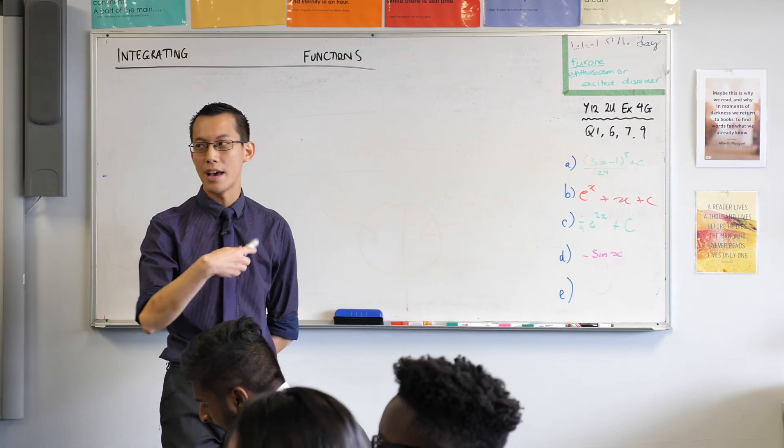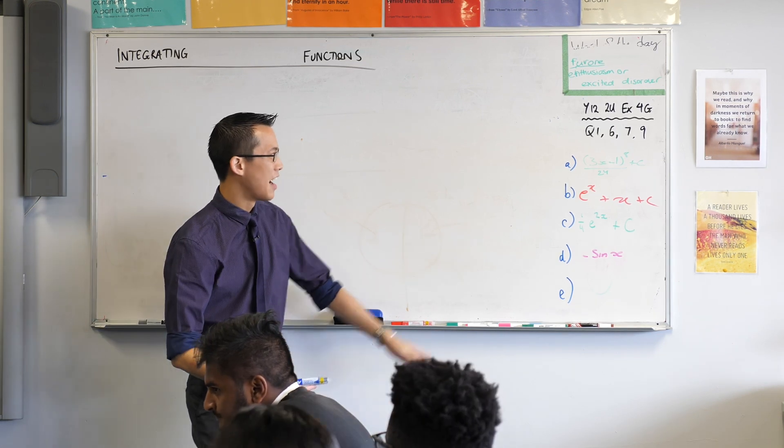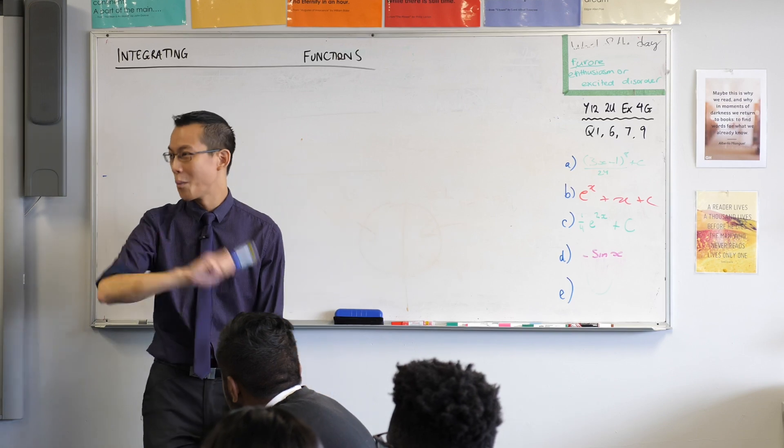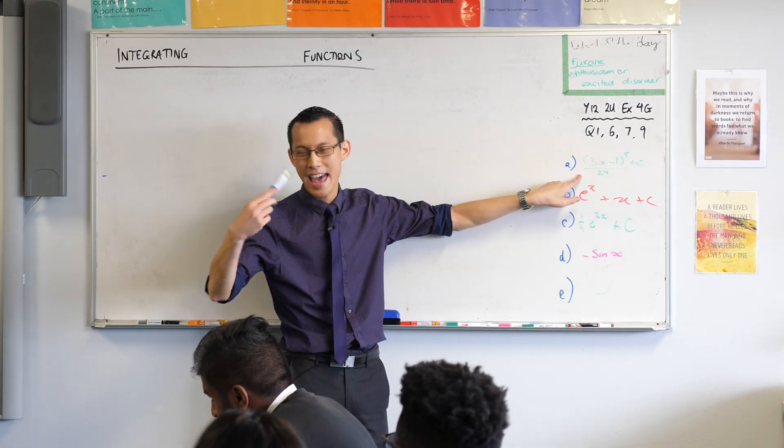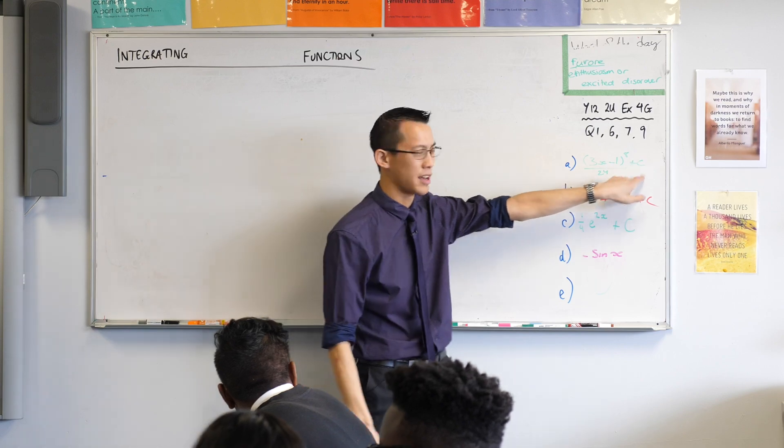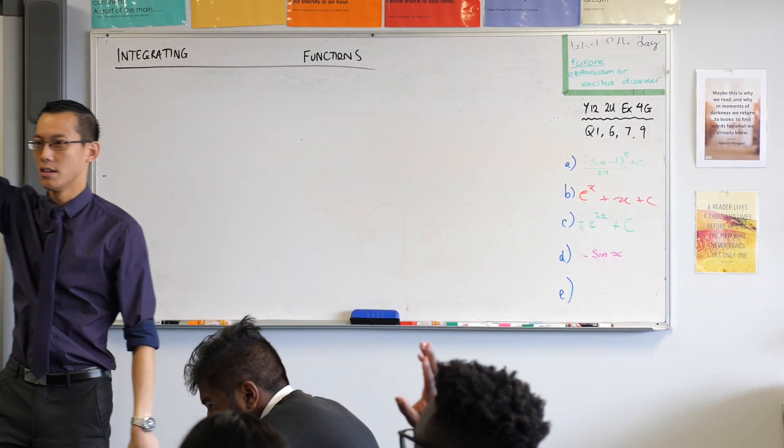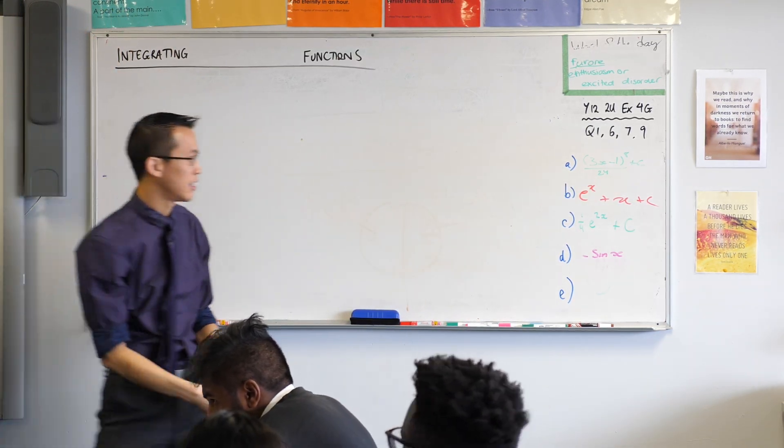3x minus 1 to the power of 7. When we get to it you can help us out. We've got 3x minus 1 to the power of 8 divided by 24 and then our plus c. Hands up for agreement. Okay, quite a few hands, fantastic, thank you hands down.